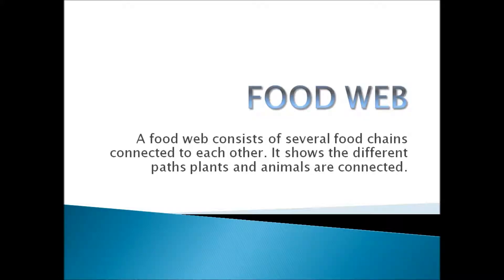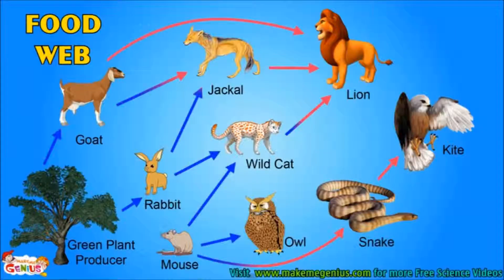A food web consists of several food chains interconnected to each other. It shows the different paths plants and animals are connected. Take a look at this picture — this is very complex. Look at the mouse: it can be eaten by the wild cat also, which may in turn be eaten by the snake. The primary producer, the green plant, can either be eaten by the goat or the rabbit. These kinds of complex food chains are called food webs, as they are interconnected like a spider web.